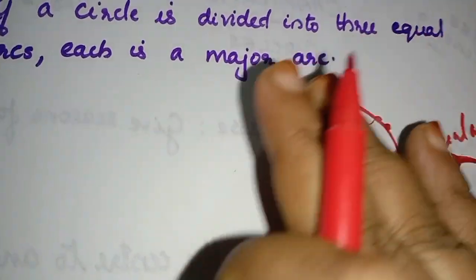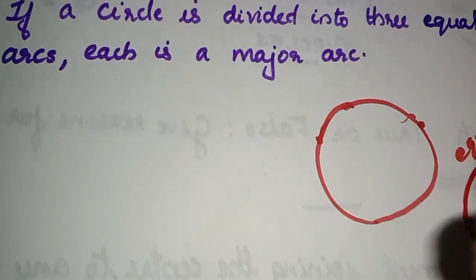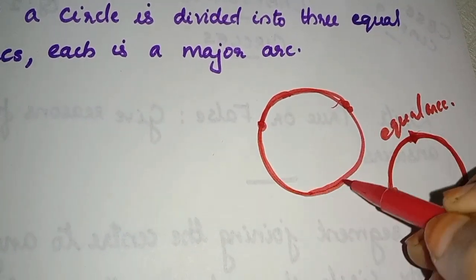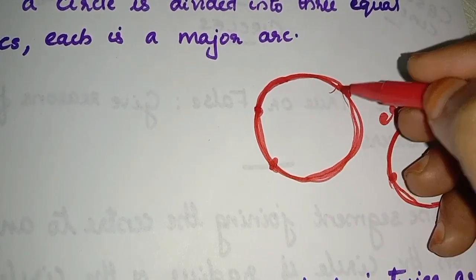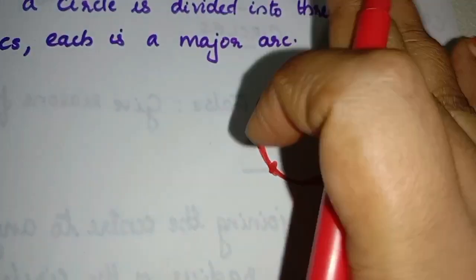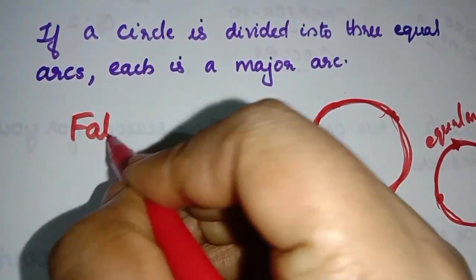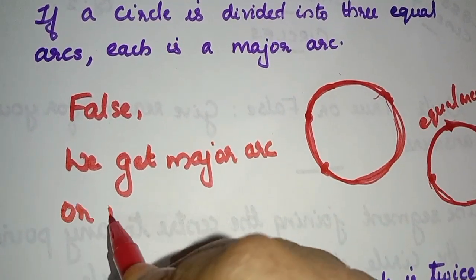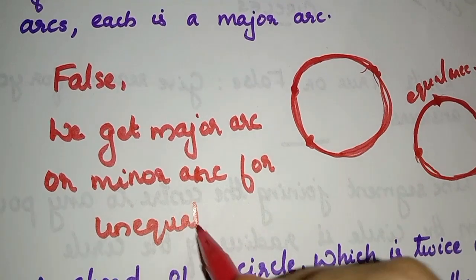Major arc, minor arc — when arcs are equal, we cannot call them major or minor. If we divide the circle into 3 equal arcs, we cannot use major arc and minor arc — we can only use equal arc. So the answer is False. For unequal arcs, we can say major arc and minor arc.